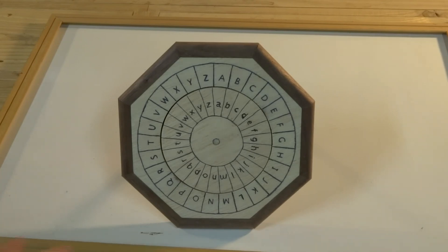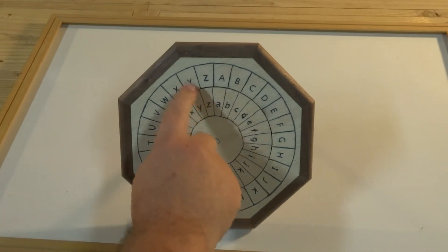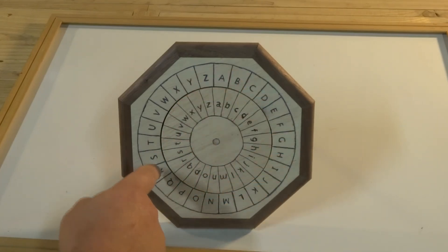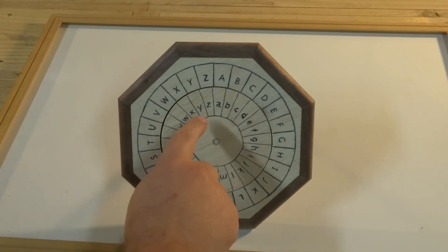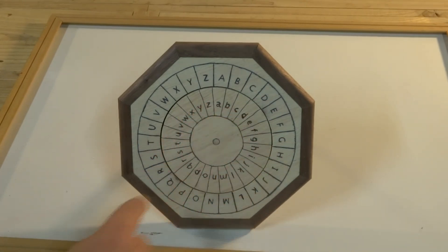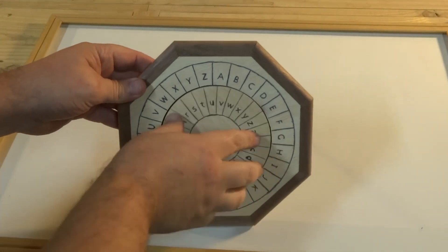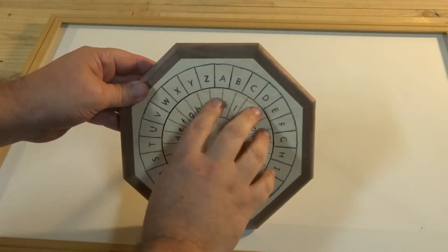Now you'll notice we have two main pieces. There's an outer ring, which is here, and that has the 26 uppercase letters of the alphabet. And then there's an inner ring, which has the 26 lowercase letters of the alphabet, and the inner ring can turn, so we can change how it's set.